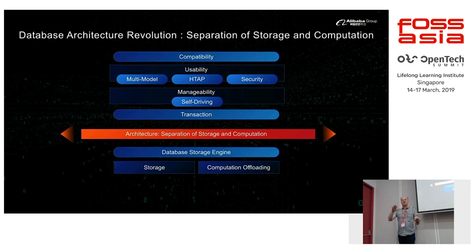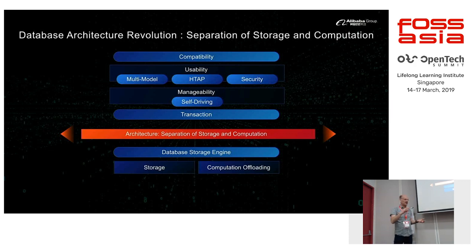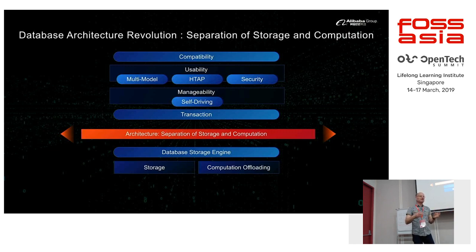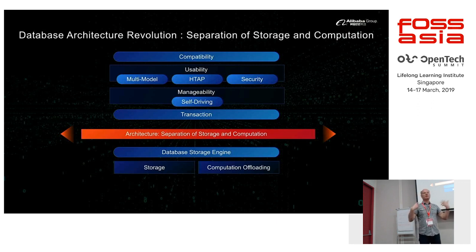You want to scale compute and storage separately. If you need more storage, you want to add more storage without necessarily adding more CPUs. If you need more processing, why should you add a full machine with more storage?